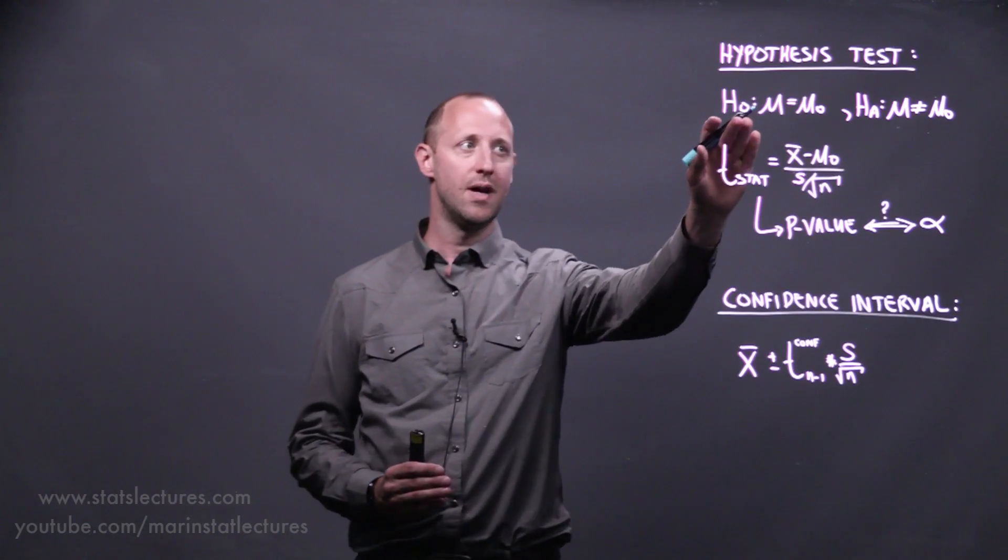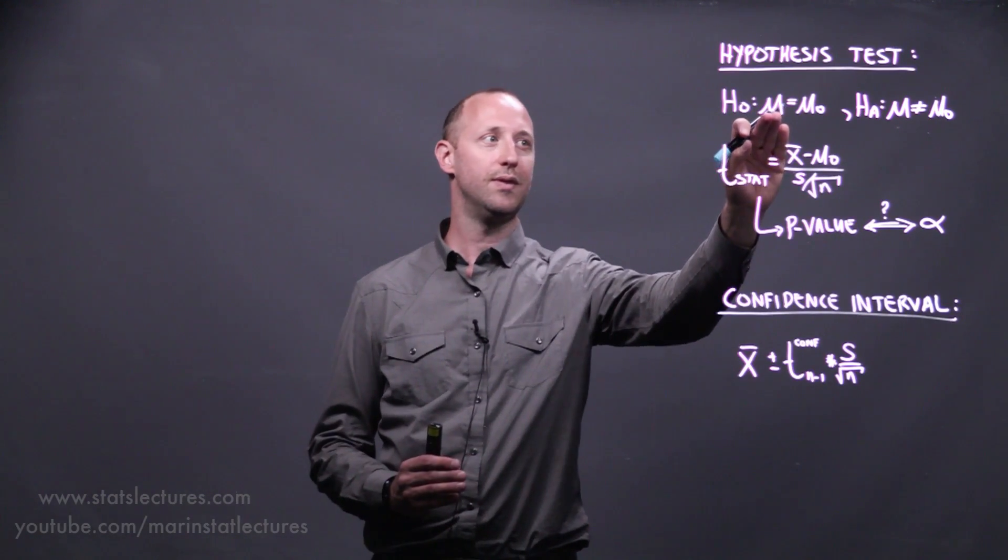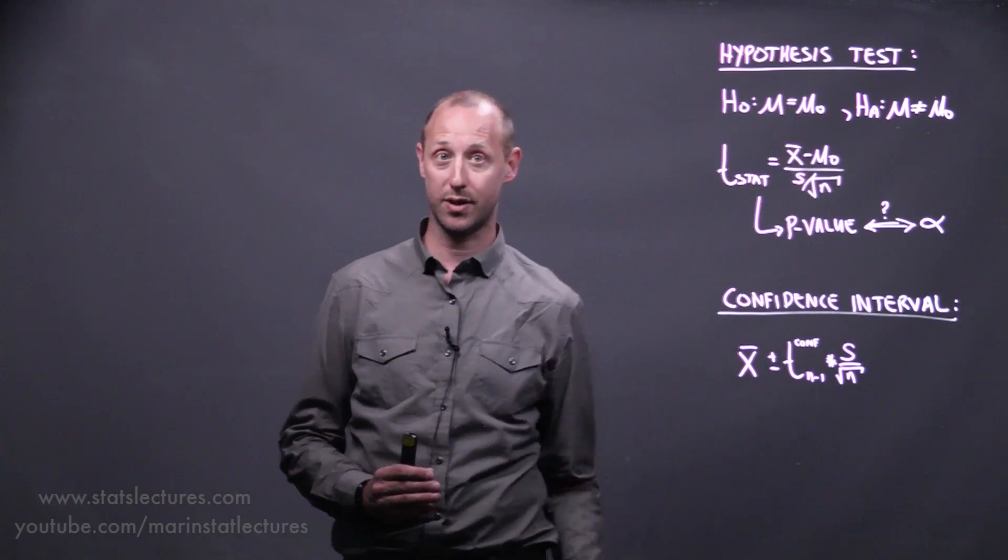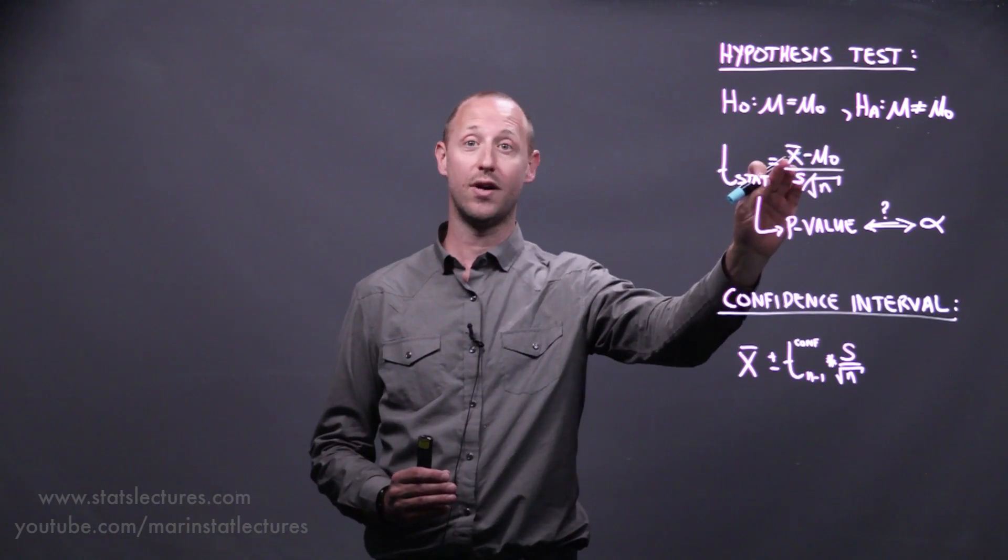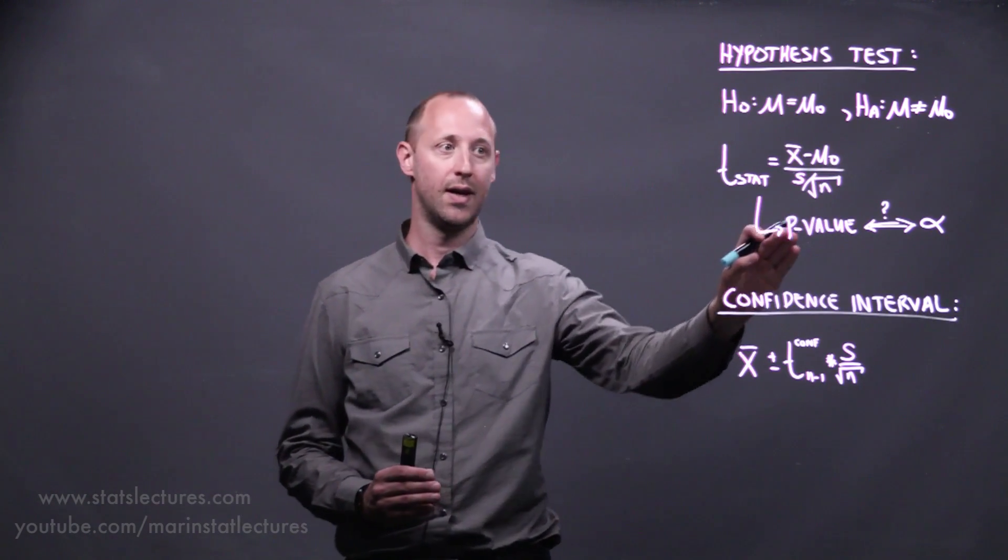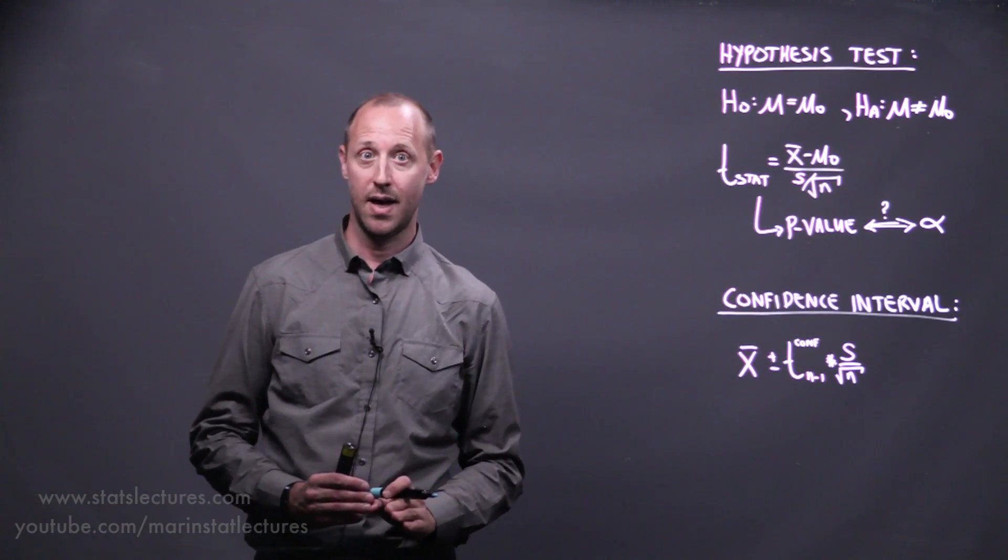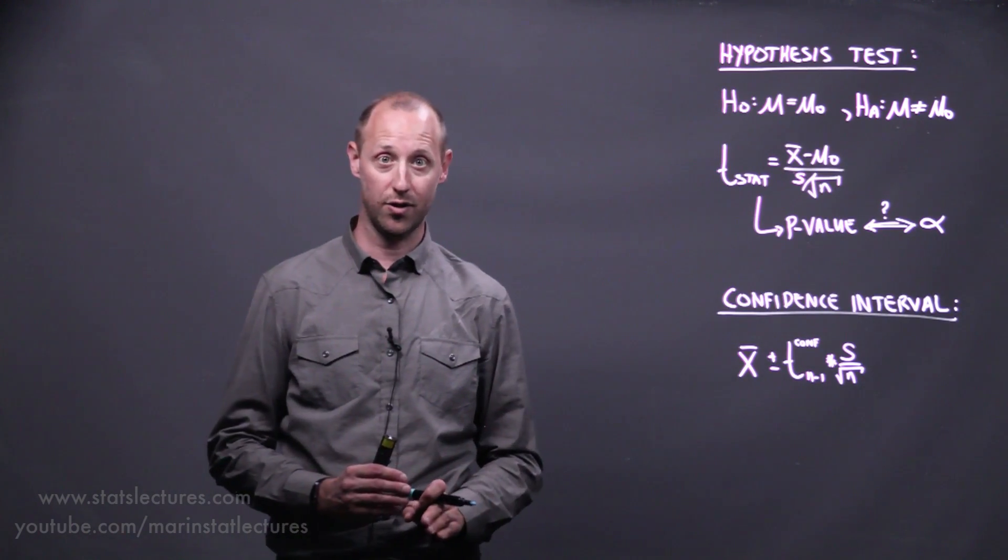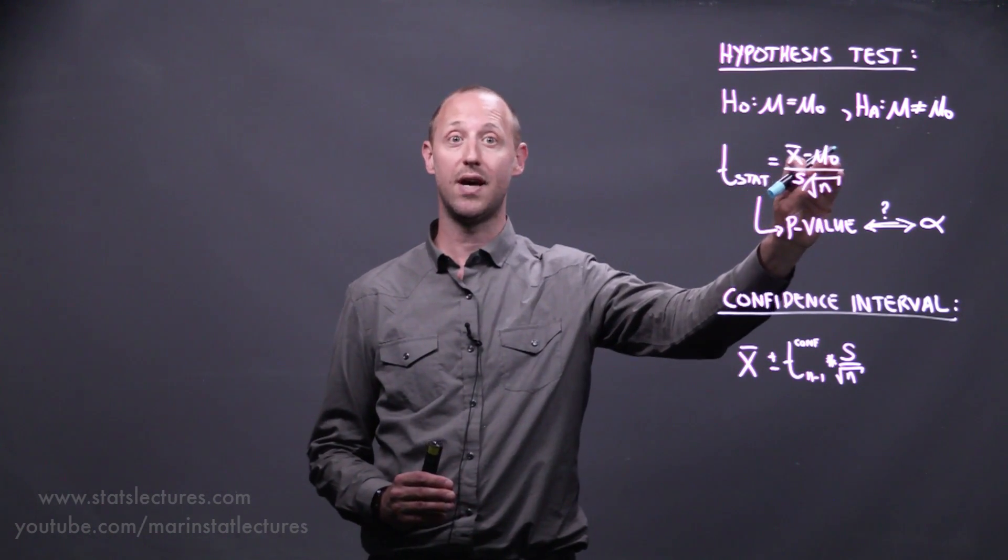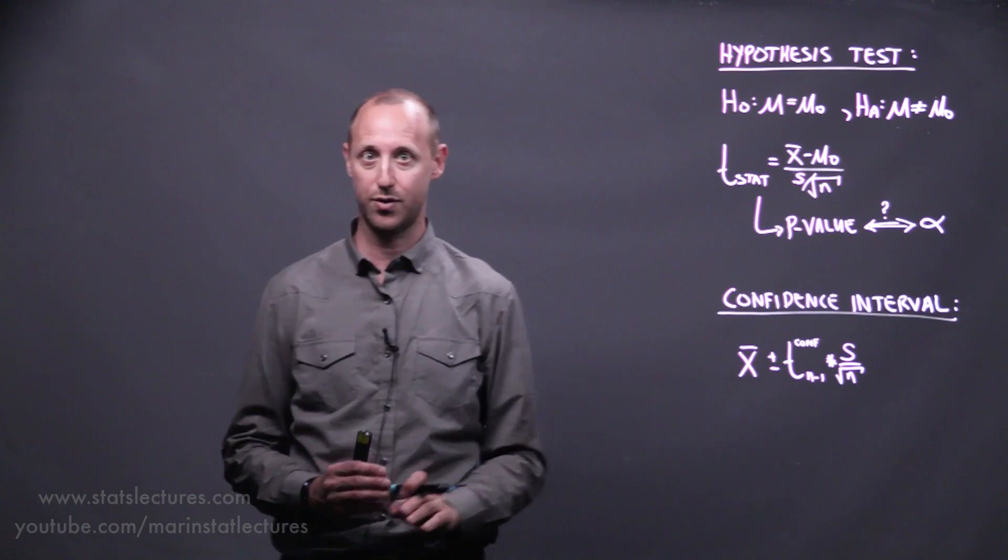Just a reminder, for a hypothesis test we assume that the population mean is equal to some null value. We calculate a test statistic which tells us how far the estimate is from that hypothesized value, then we get a p-value and compare that to our alpha to help us decide whether we should reject our null or not. Do we have evidence to believe that mu-naught is not the true population mean?